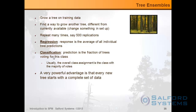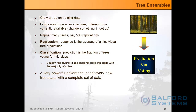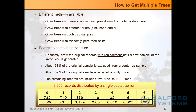When we work in classification — which I'm not covering in this presentation, but for those interested — the end result is usually overall class assignments based on the majority of votes. A very powerful advantage here is that every new tree starts with the complete set of data. The critical question is: how do we come up with multiple trees? How do we grow them? It turns out there are different methods available to make it happen.